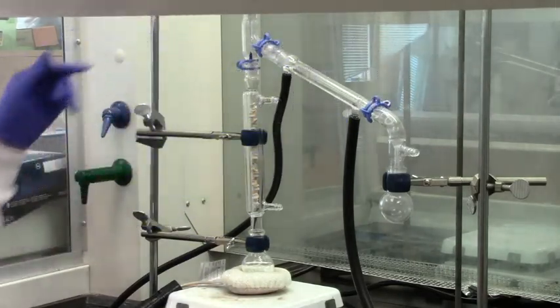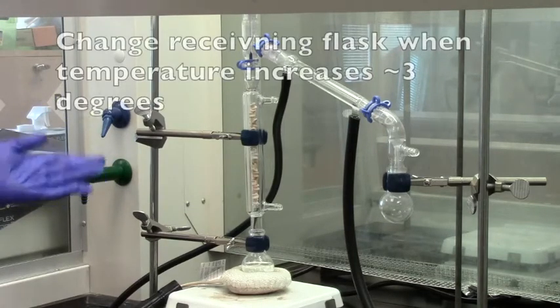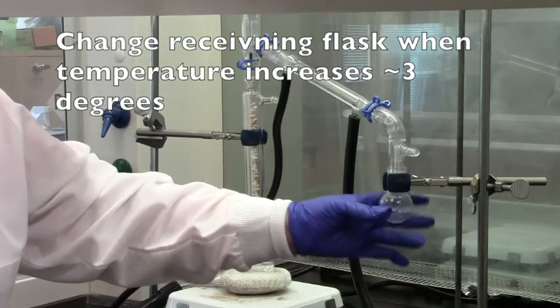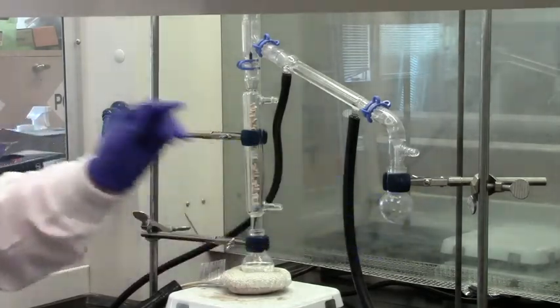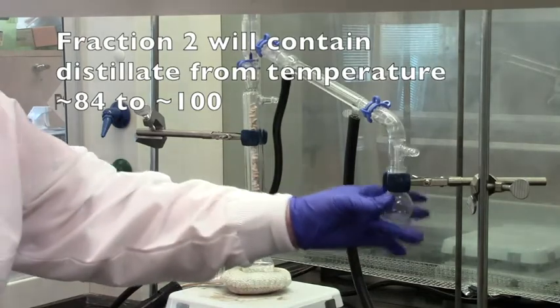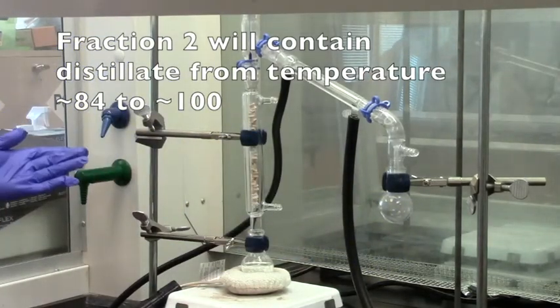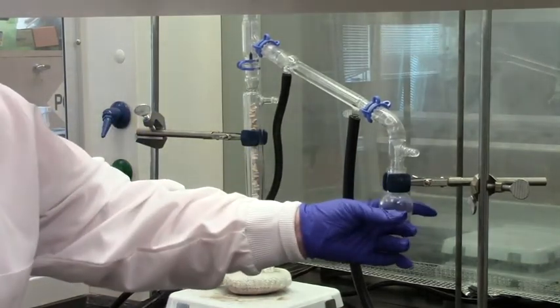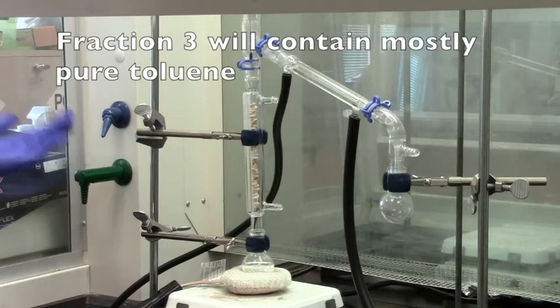Once the temperature starts to fluctuate more than maybe three degrees, plus or minus three degrees, at that point, we probably want to change our receiving flask. So the first flask will have mostly cyclohexane in it. The second flask, I'll collect material from about 84 degrees to 100 degrees. And then after 100 degrees, I'll probably change that flask and then collect the third flask or the third material, which will mostly be toluene.